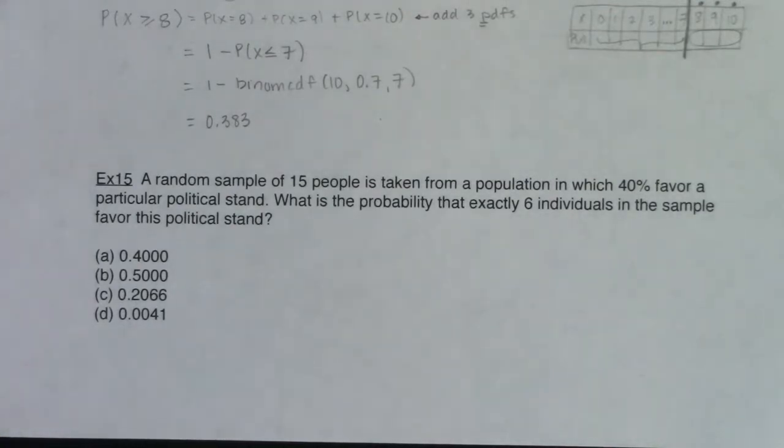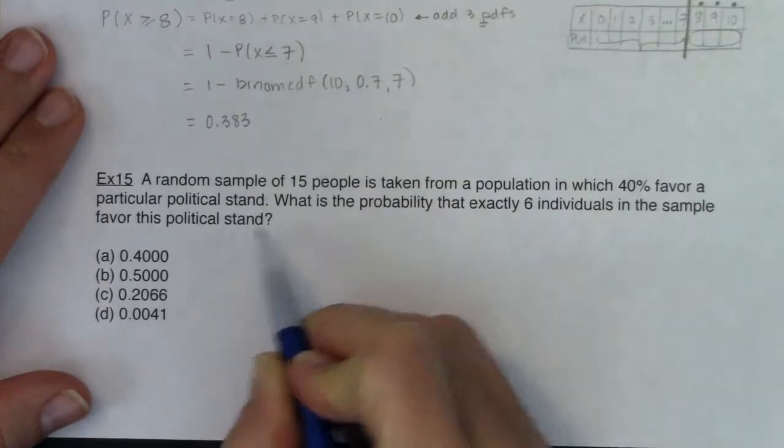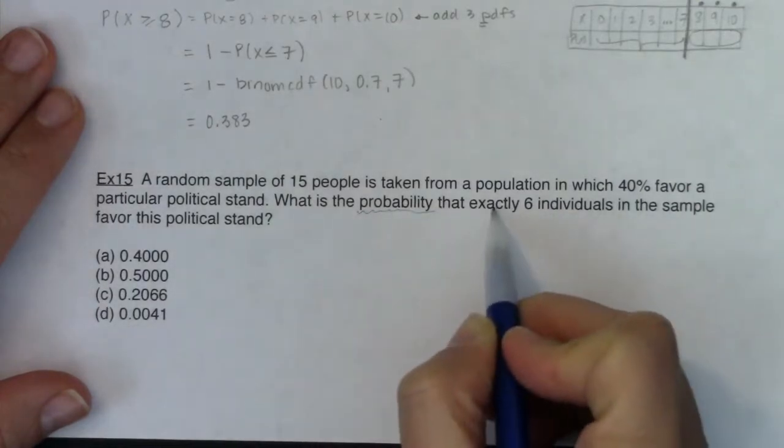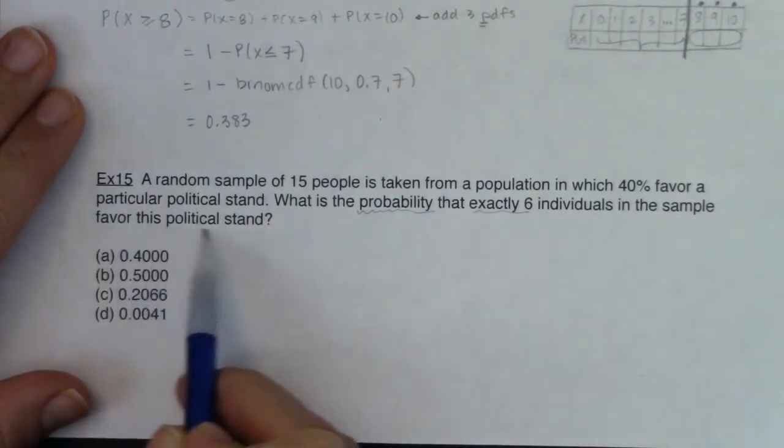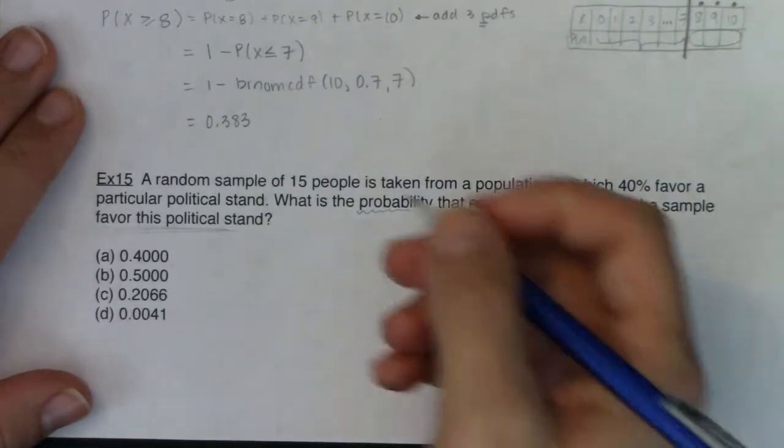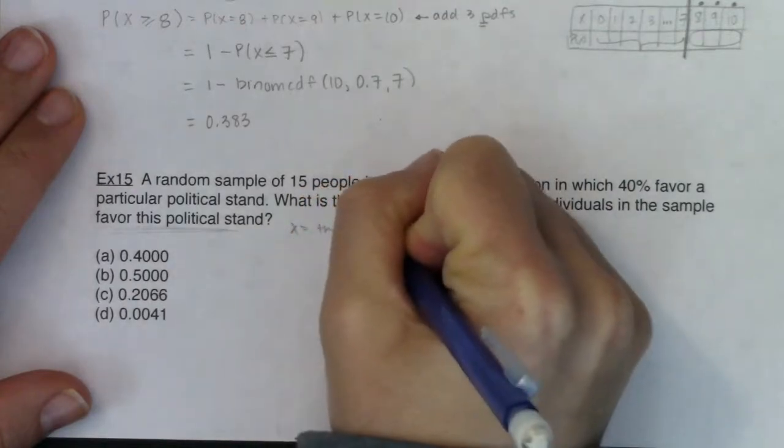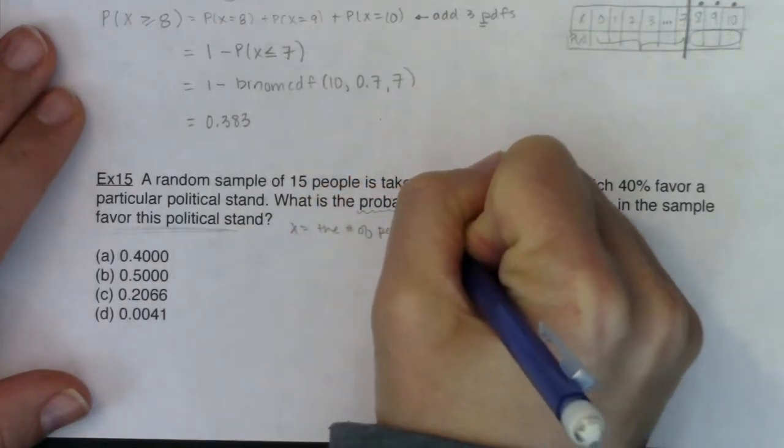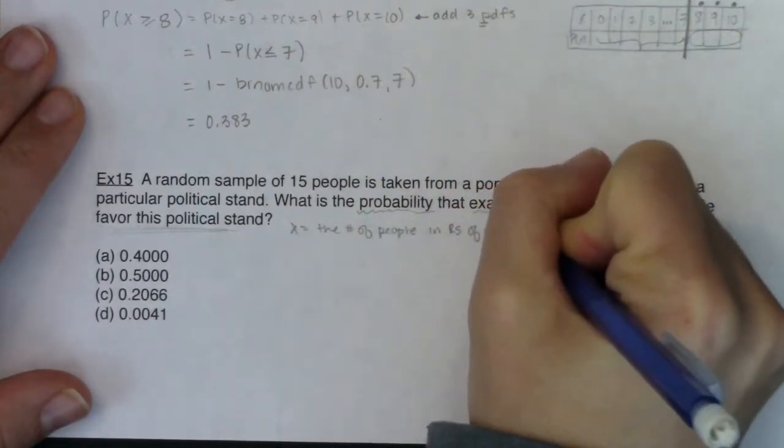All right, so with all of this, it's always what is the variable, right? What are we keeping track of here? The variable is usually hidden somewhere in this last sentence, which happens to be a question. You see probability and you see exactly six, but you see favor this political stand. There's my variable. If we're going to talk to 15 people, how many of these people favor this political stand? So my variable for this problem, X is the number of people in my SRS or my random sample of 15 that favor this political stand.